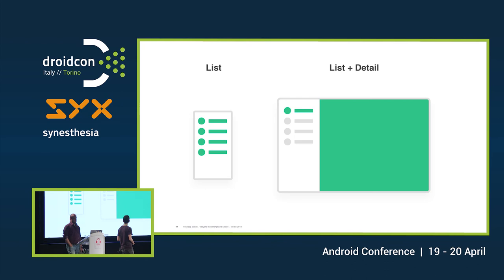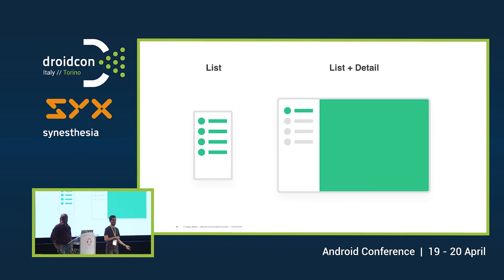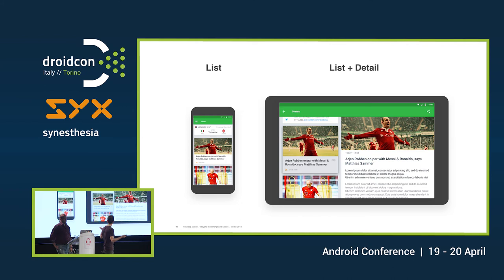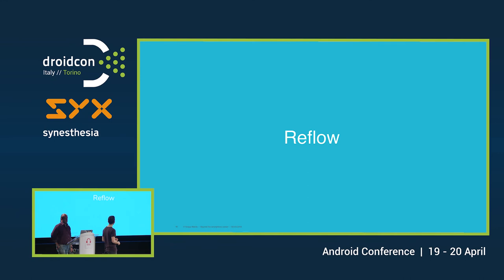Another pattern is Divide. Usually on the phone we have a list view and then enter a detail view. What we can do on larger layouts is show both — so you don't have to go back from a detail view to a list view. In the case of a news stream, you can switch directly between different articles while focusing on the detail of that article itself.